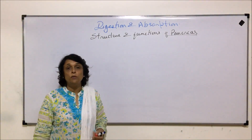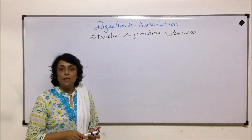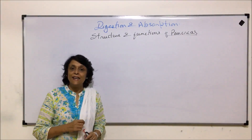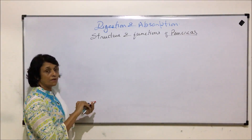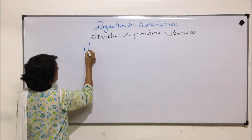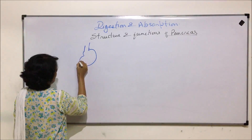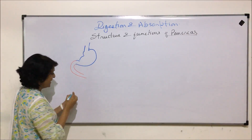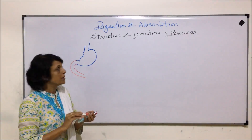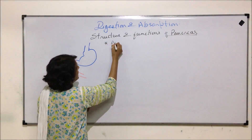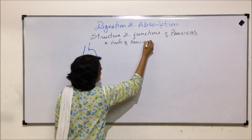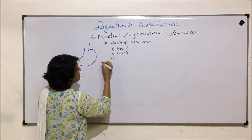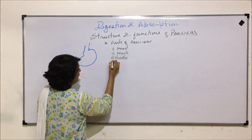We have already seen the position of the pancreas. It is between the stomach and the duodenum. The pancreas has four parts in its structure: these parts are called the head, neck, body — the main part — and the tail part.